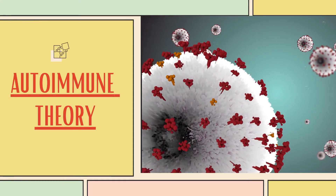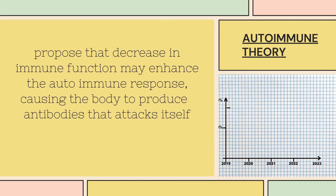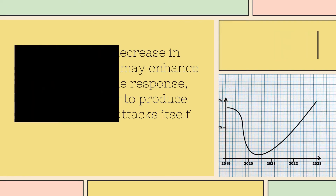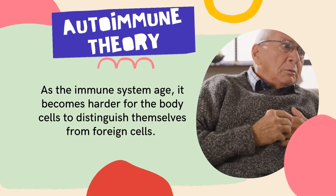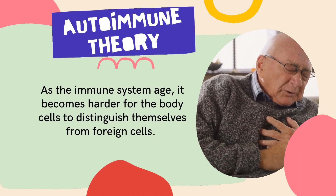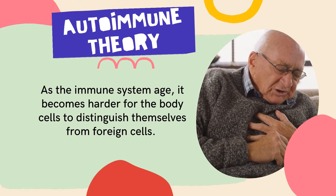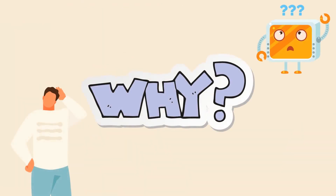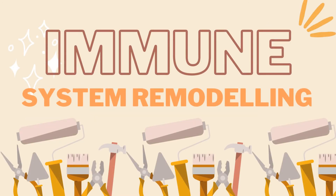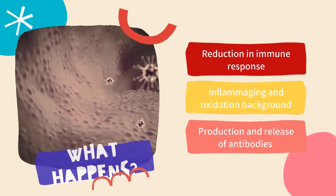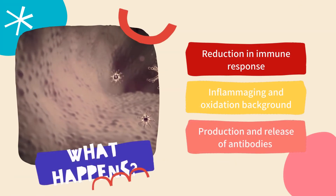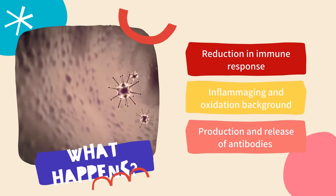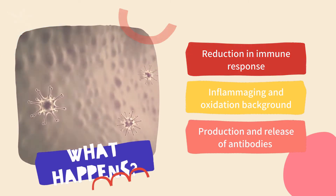Next, we move on to autoimmune theory. It proposes that a decrease in immune function may enhance the autoimmune response, causing the body to produce antibodies that attack itself. As the immune system ages, it becomes harder for body cells to distinguish themselves from foreign cells. As we age, immune system remodeling occurs continuously, resulting in a reduction in immune response, an increase in inflammatory and oxidative background, and the production and release of autoantibodies.